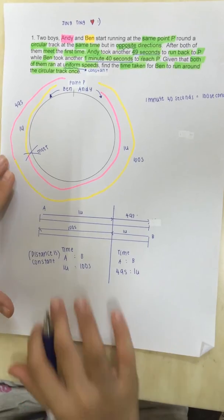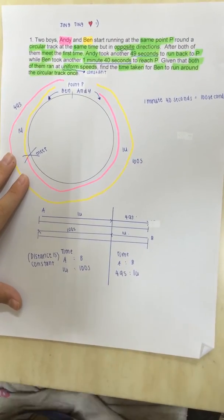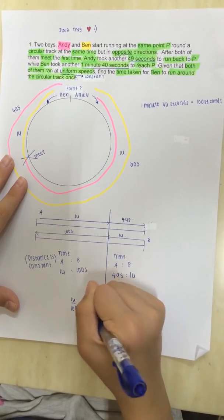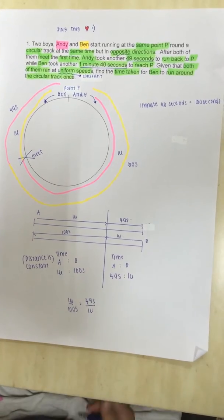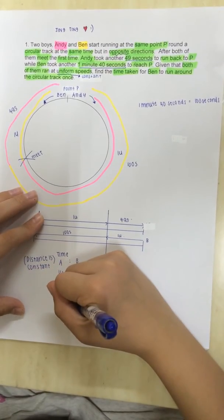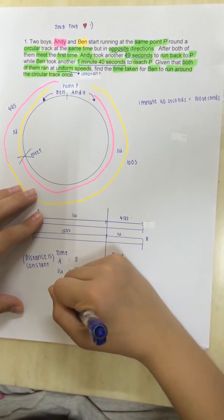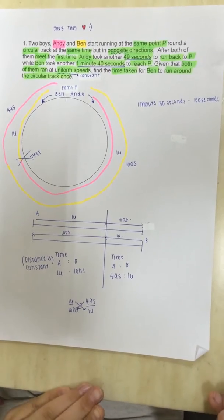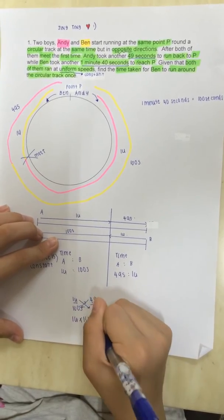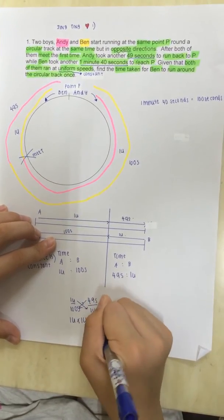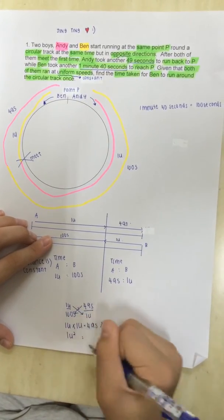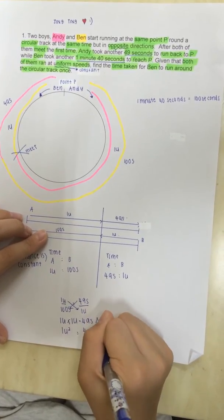By looking at these two ratios, we can find out that 1 unit out of 100 seconds is equal to 49 seconds out of 1 unit. So, now, we apply the cross-multiplication method, which is actually doing this. As you want to multiply the units and multiply the seconds. So, 1 unit times 1 unit is actually 49 seconds times 100 seconds, which is also 1 unit squared, which is also equal to 4900 seconds.